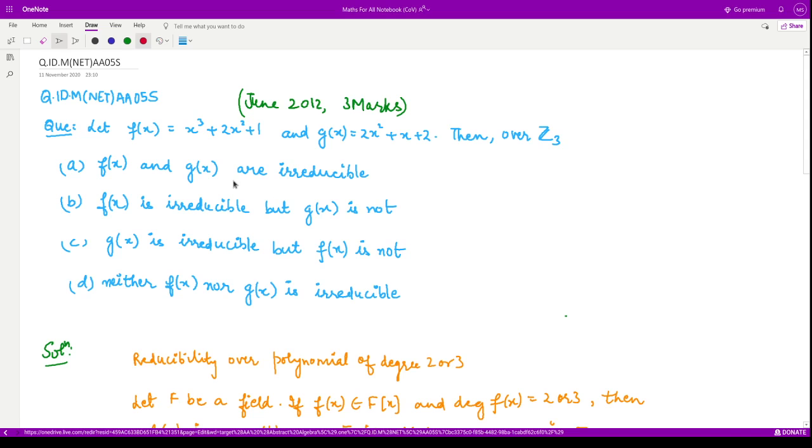Hello everyone, welcome to this video. In this video we shall see a question from June 2012 consisting of three marks. The question says if f(x) is given to be x³ + 2x² + 1, this is a polynomial of degree 3, and g(x) is given to be 2x² + x + 2, which is a polynomial of degree 2, then over Z₃, which is a finite field...